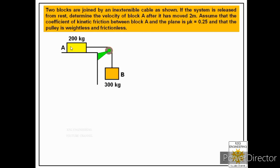In order to solve this problem, we have to see how many bodies are in motion. We have two blocks: block B is moving in the downward direction and block A is moving towards the right. So we have to construct their individual free bodies. Let us first construct the free body of block A.